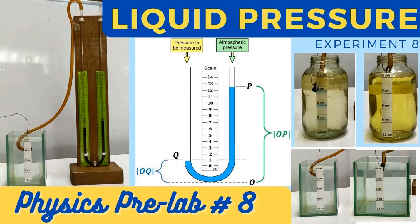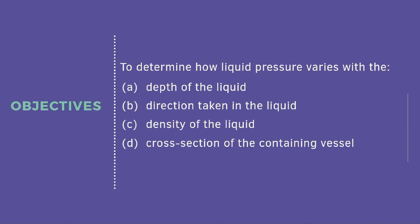The objective of this experiment is to determine how liquid pressure varies with the following: first, the depth of the liquid; second, the direction taken in the liquid — either left, right, or down; third, the density of liquid, so we will use water, glycerin, and kerosene; and fourth, we will also investigate liquid pressure versus the cross-section of the containing vessel, in which there is a big container and a small container.